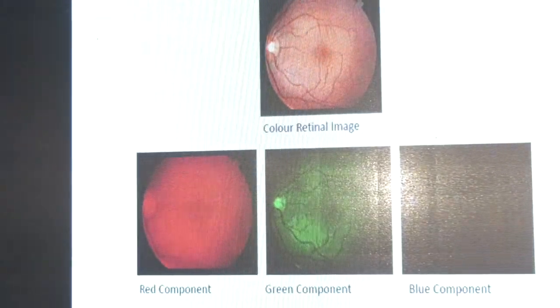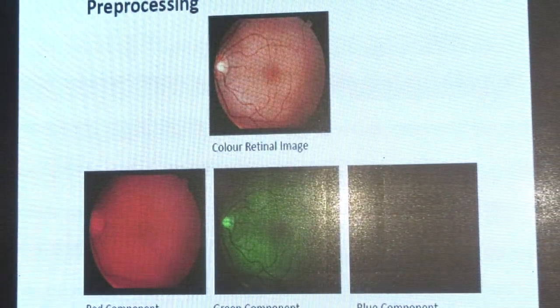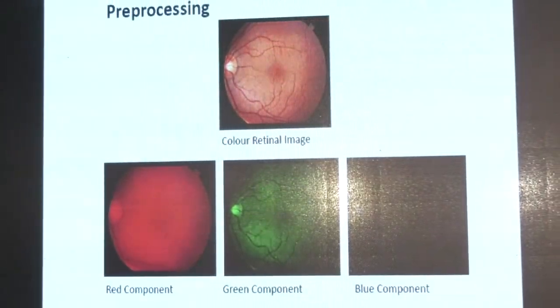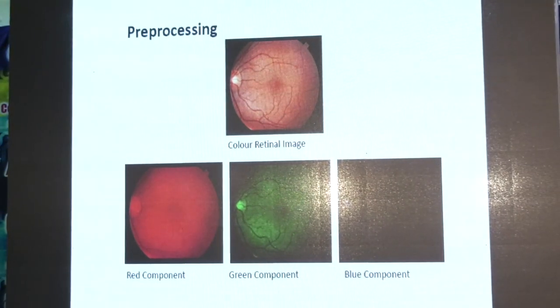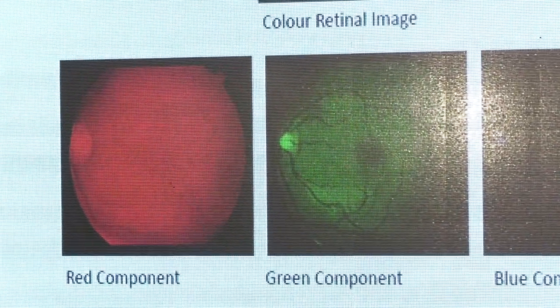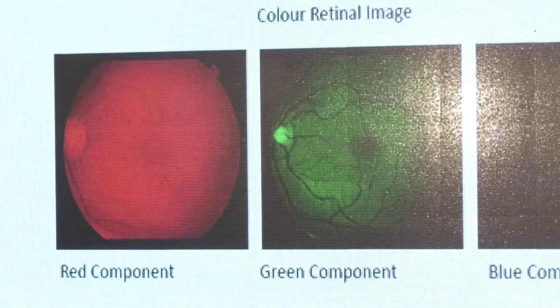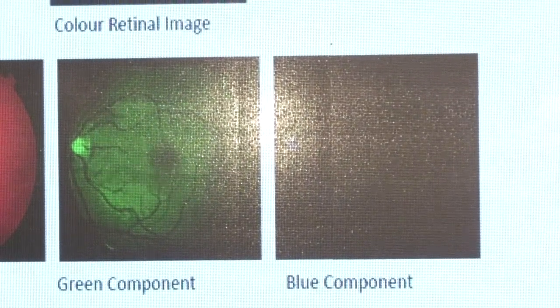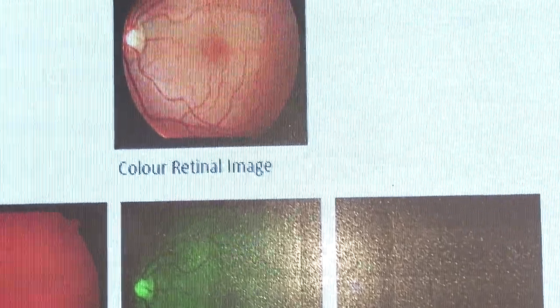Whatever the colour image is there, the image is taken from the fundus image. That colour image is divided into three plates — like green and blue. If you observe that, whatever the nerves is there, they are clearly visible in the green channel. So that will be our first invention. If you are able to process the green plane, we can able to give it a clear indication. So that paper has many citations — more than a hundred citations for that particular paper.